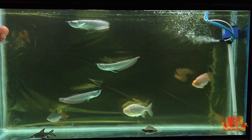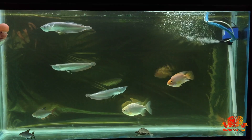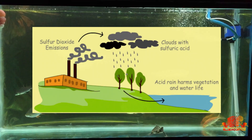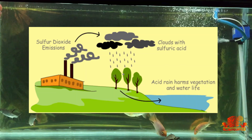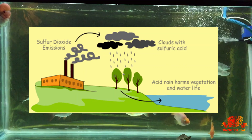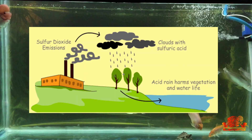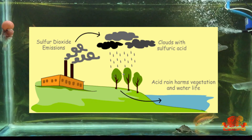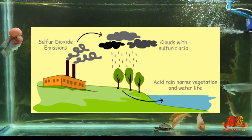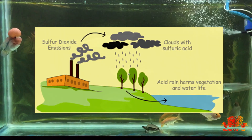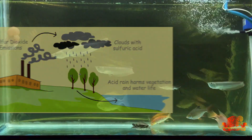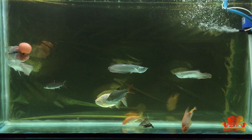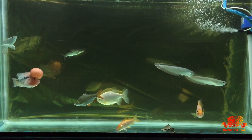It is also possible that rainwater can be contaminated from air pollution. So if you are thinking of using this form of water, you have to do a lot of effort to make it ready as per the fish's requirements.